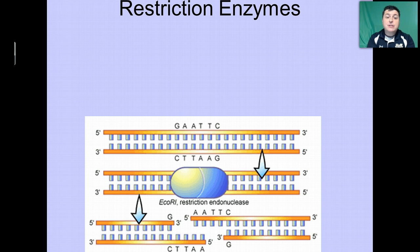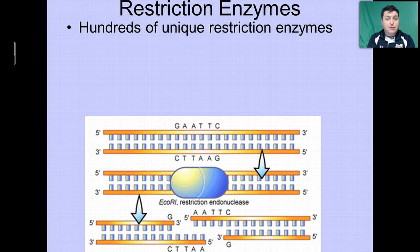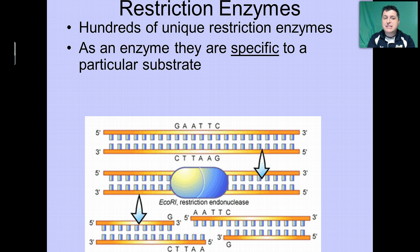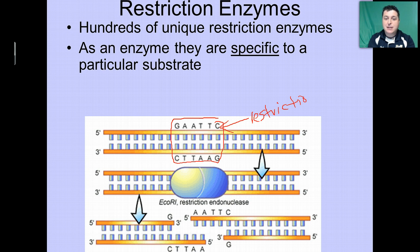Each of these restriction enzymes — of which there are hundreds — has a specific substrate. In this case, that specific substrate is a sequence of DNA bases. This specific sequence we call a restriction site, because this is the site where that DNA is going to be cut by the restriction enzyme, also known as a restriction endonuclease.